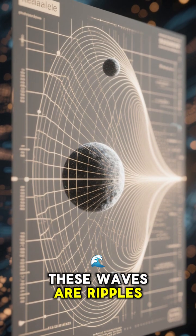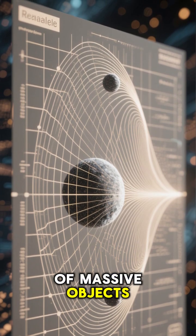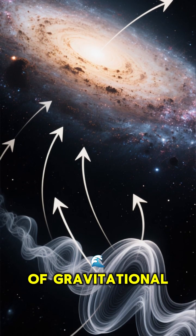You see, these waves are ripples in space-time caused by the acceleration of massive objects. And since galaxies have a lot of mass, they produce a lot of gravitational waves.